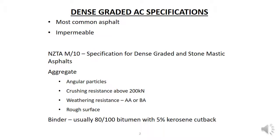Some of the main requirements set out in the specification are that the asphaltic concrete should consist of angular particles to maximize contact areas between particles, and have a crushing resistance above 200 kN. Note that this is less than the 230 kN required for chip seal, and the aggregate should have a weathering index of AA or BA.